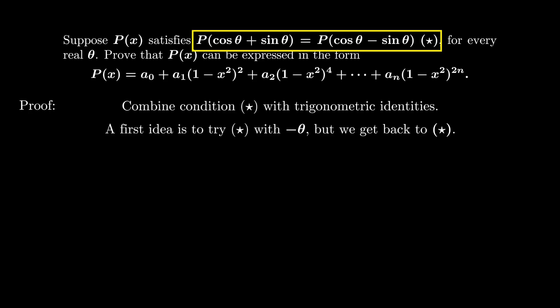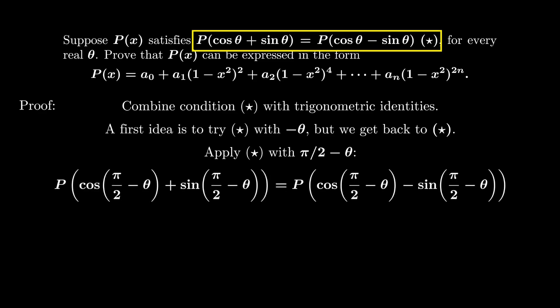After that I try some different variants and here is what works. We apply the condition with π/2 - θ. In this case, cos(π/2 - θ) = sin θ and sin(π/2 - θ) = cos θ. So this means P(cos θ + sin θ) = P(sin θ - cos θ).